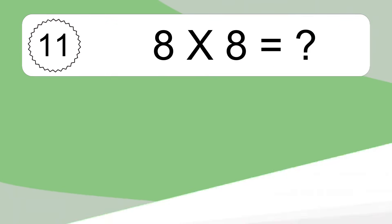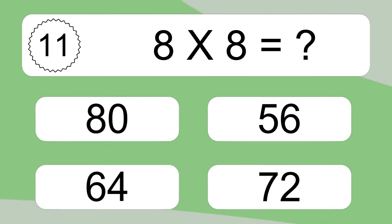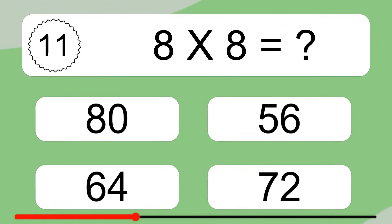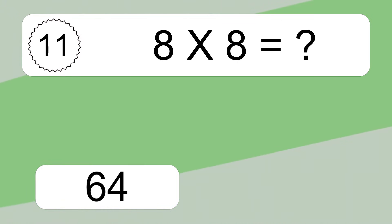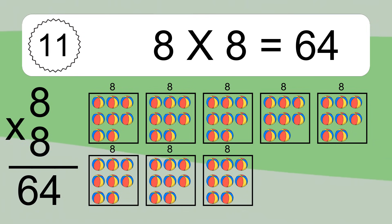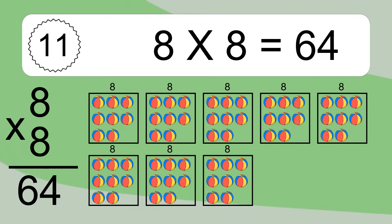8 times 8 equals what? 8 times 8 equals 64. We have 8 boxes, and each box has 8 colorful balls inside. If you count all the balls in all the boxes together, you will have 8 times 8 balls. This equals 64 balls.